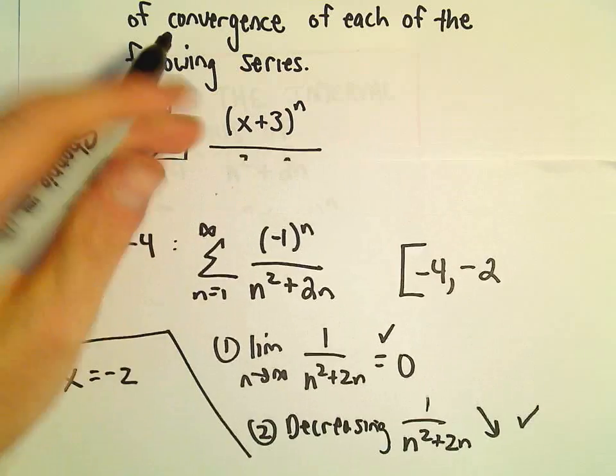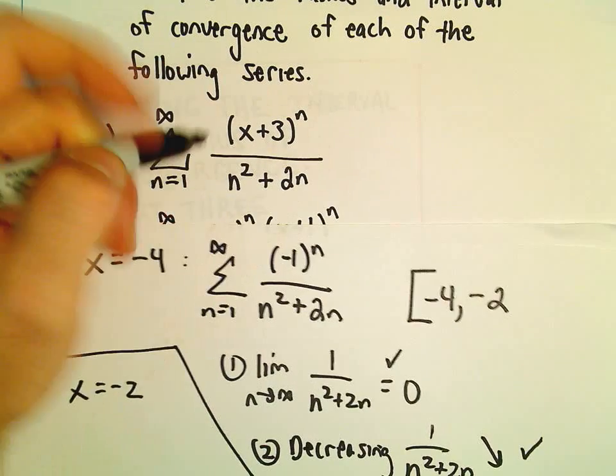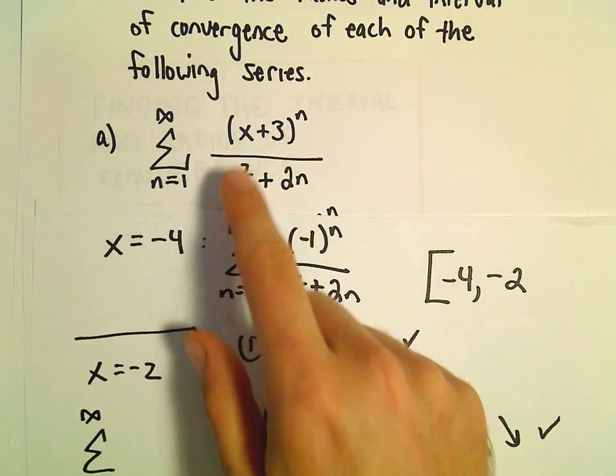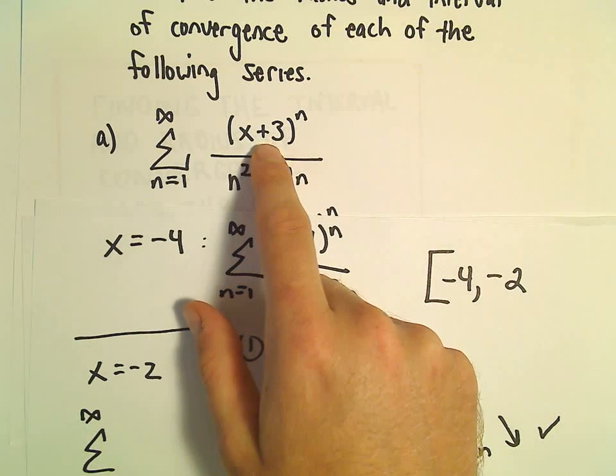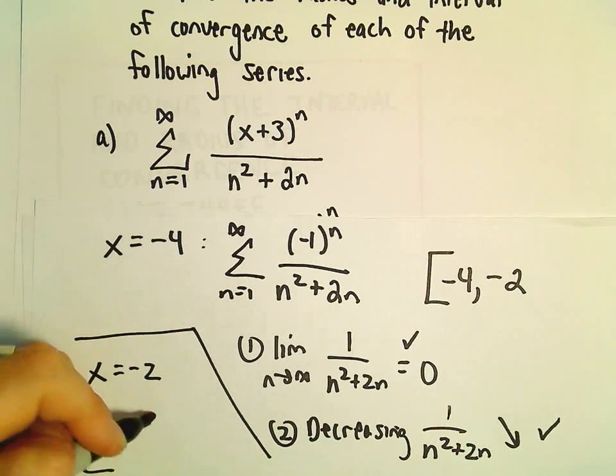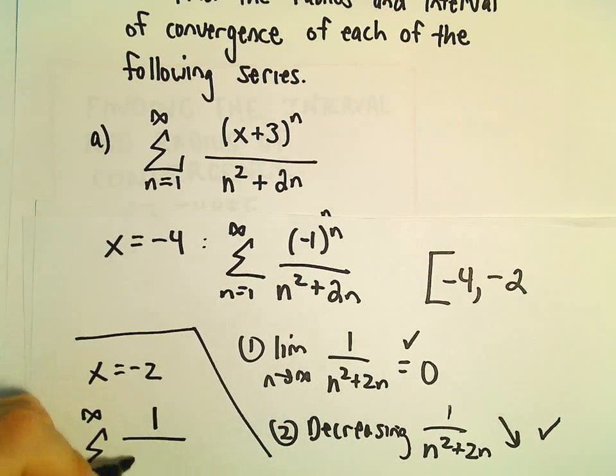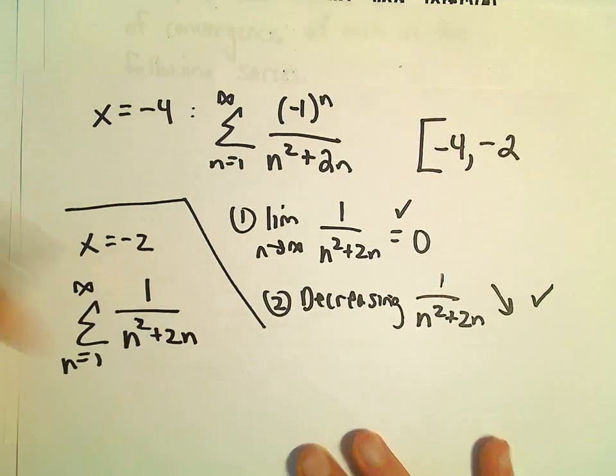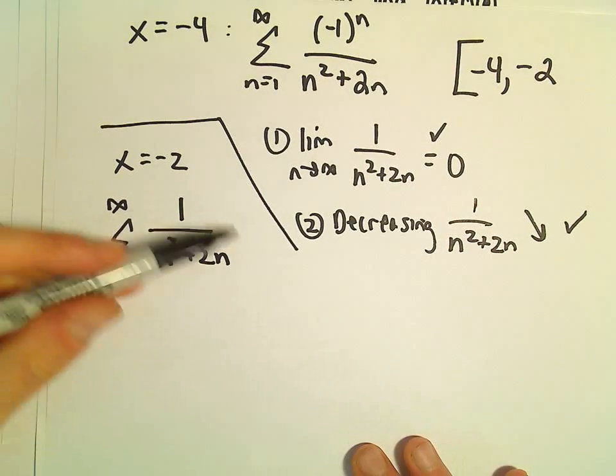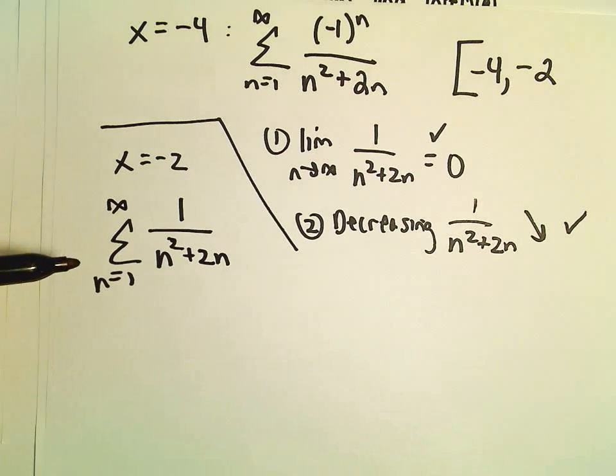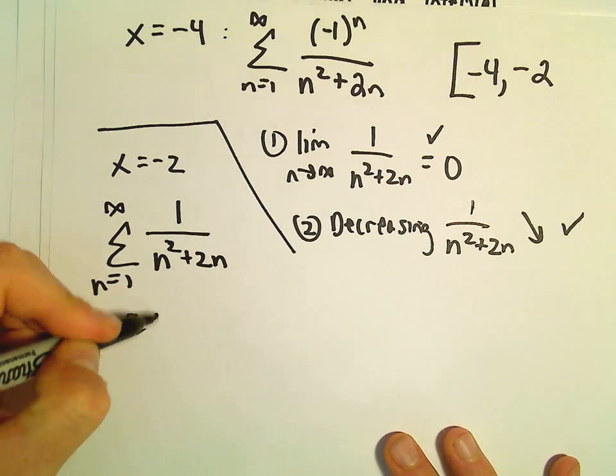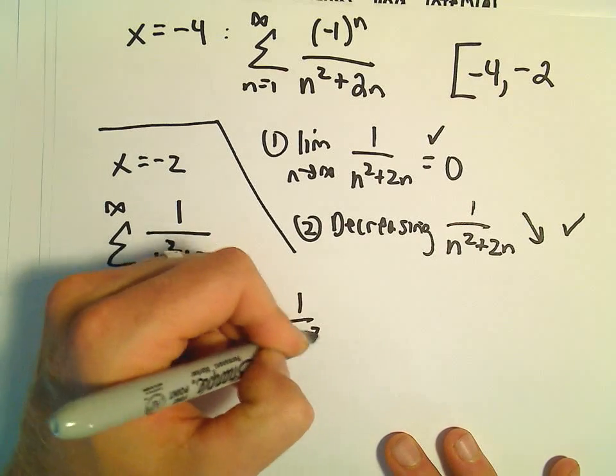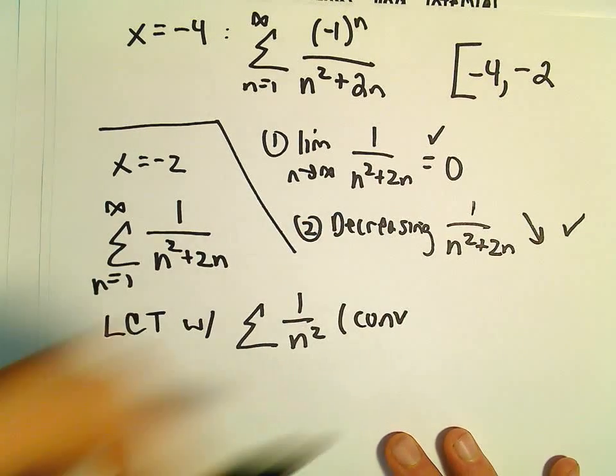When we plug negative 2 back into our original series. Well, in that case, we'll have negative 2 plus 3, which is positive 1. 1 to the n power is just 1. So, then we have 1 over n squared plus 2n. Okay, so now we're wondering, does this series converge or diverge? Well, here we can do the limit comparison test with the series 1 over n squared. And again, this is just a convergent p-series.